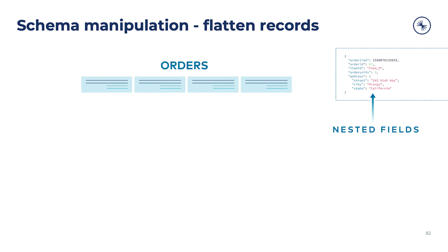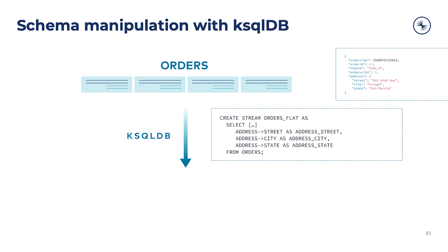ksqlDB makes it easy to transform the schema of an event stream. For example, if we have events with a nested record structure and we want to flatten them, using the AS operator, we can convert the nested fields into top level fields and leave the nested field out of the SELECT for our new stream.